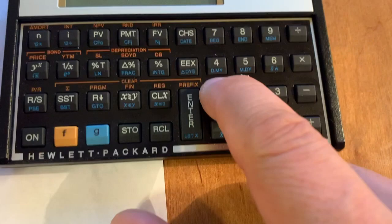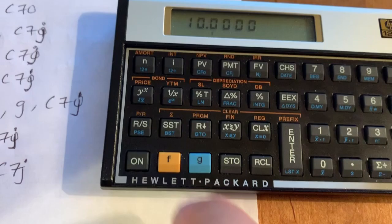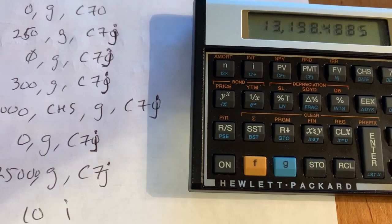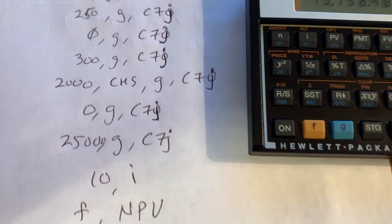And then you have 10% interest requirements per year. So you've got 10 interest. And you're going to solve for net present value, which is this key right here. And your net present value comes up, in this case, positive $13,198.49. So it is a good investment.